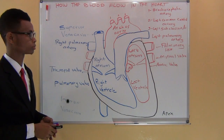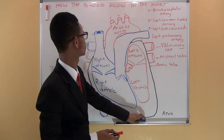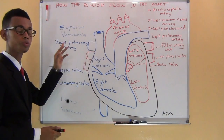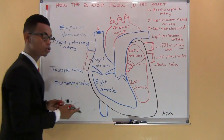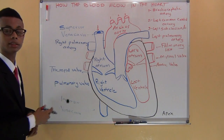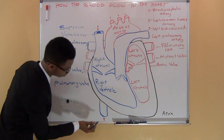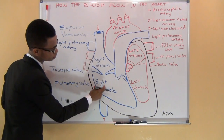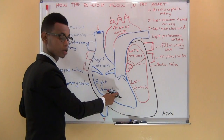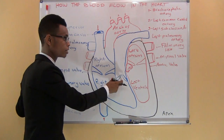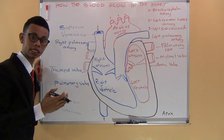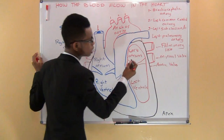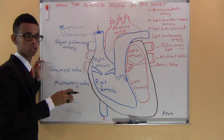Let's look at how blood flow happens. The first step: deoxygenated blood enters the right atrium, flows through the tricuspid valve into the right ventricle, then through the pulmonary valve and the pulmonary artery into the lungs. In the lungs, carbon dioxide is removed from the blood and oxygen is picked up. Through the pulmonary veins, the oxygenated blood returns to the heart into the left atrium.